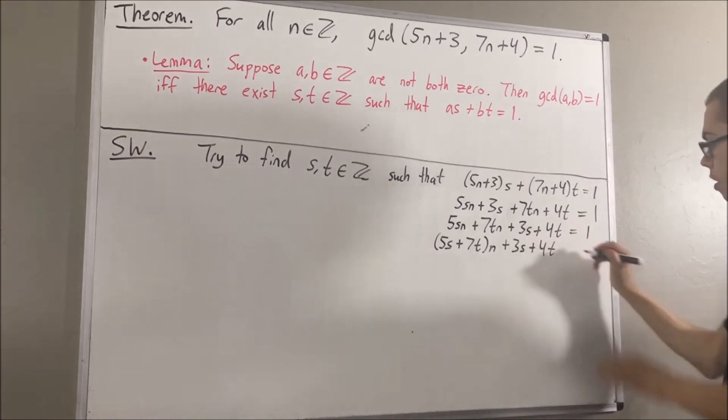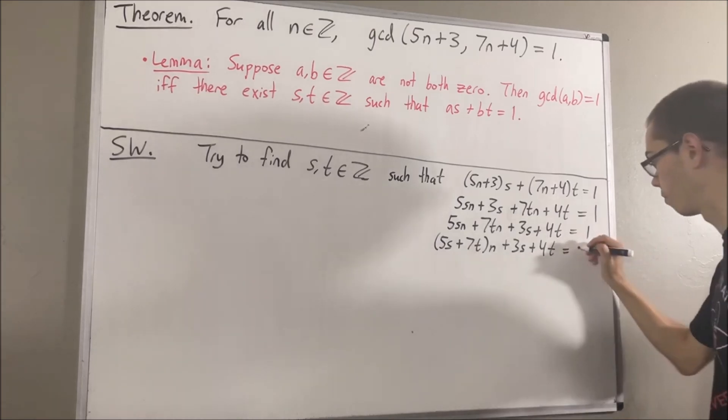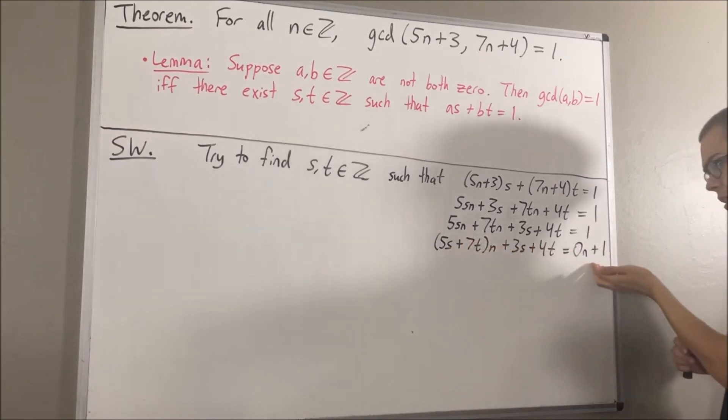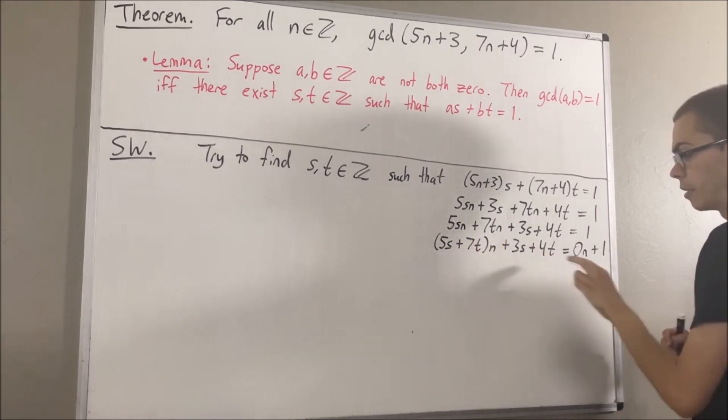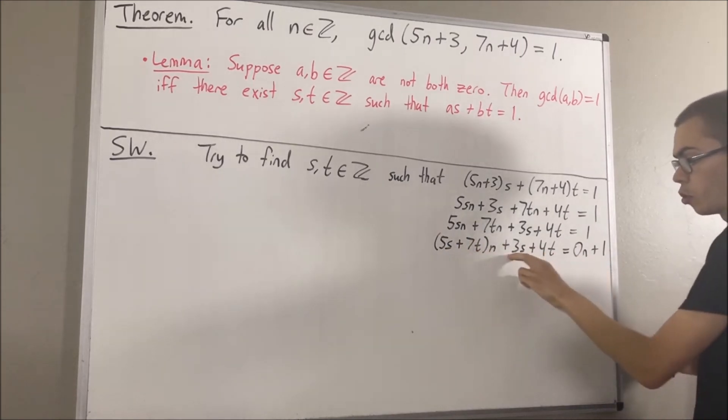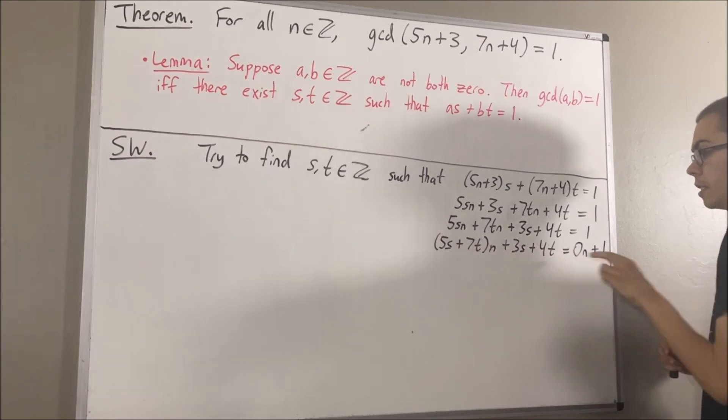So really, this is just equal to 1, but I'm going to rewrite 1 as 0n plus 1. So, what this means is, we expect 5s plus 7t to be equal to 0, and 3s plus 4t to equal 1.